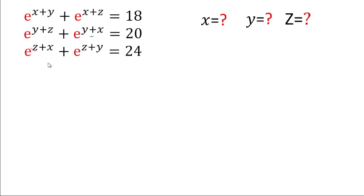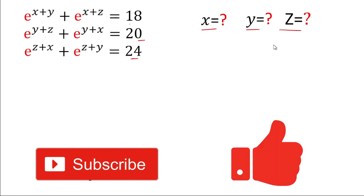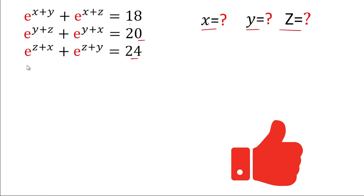Hey friends, welcome back! Today in this video we will solve this interesting algebraic problem. The given problem is: e^(x+y) + e^(x+z) = 18, e^(y+z) + e^(y+x) = 20, and e^(z+x) + e^(z+y) = 24. We have to find the value of x, y, and z. If you have not subscribed to my channel, please subscribe and give a thumbs up to the video.